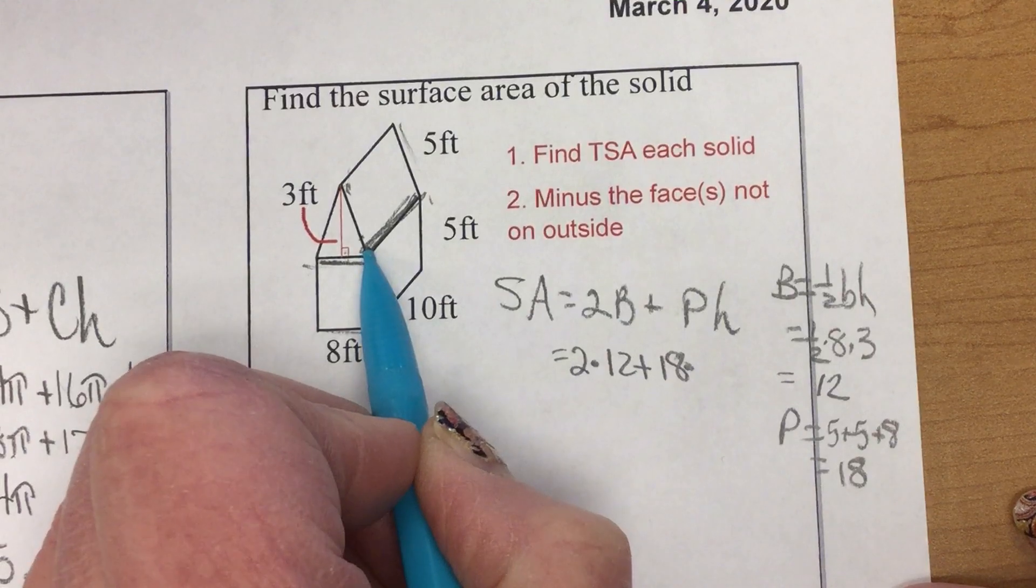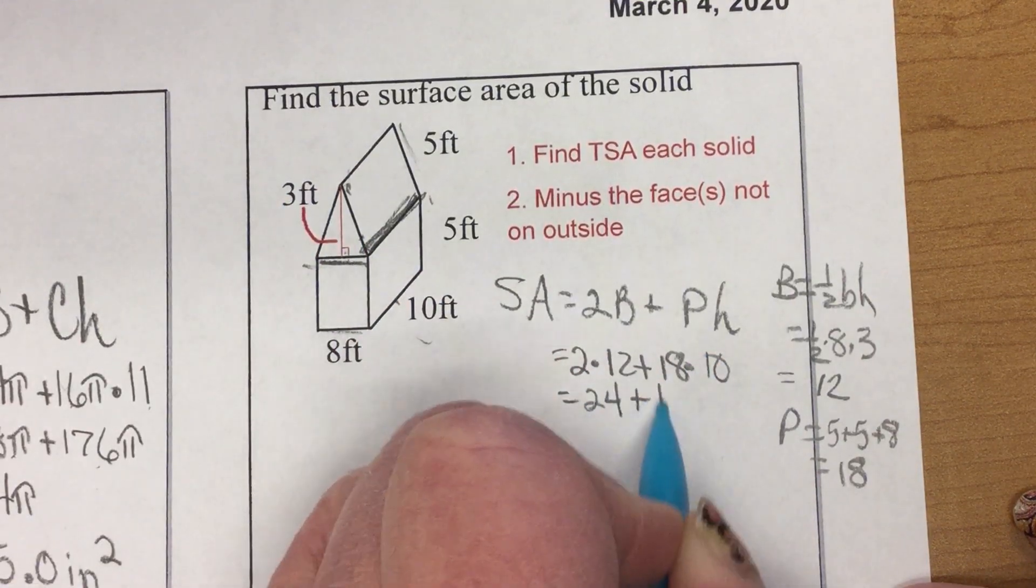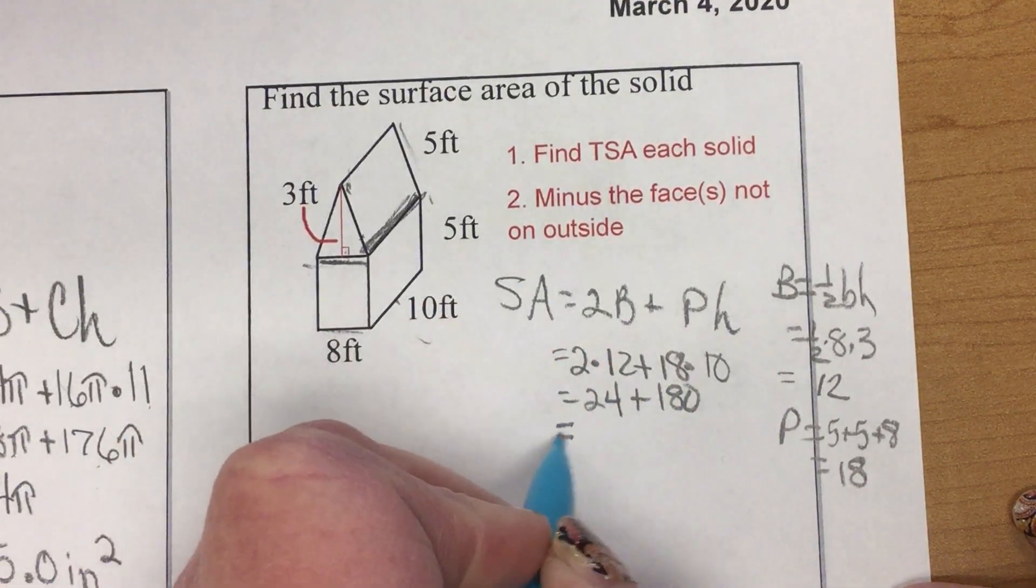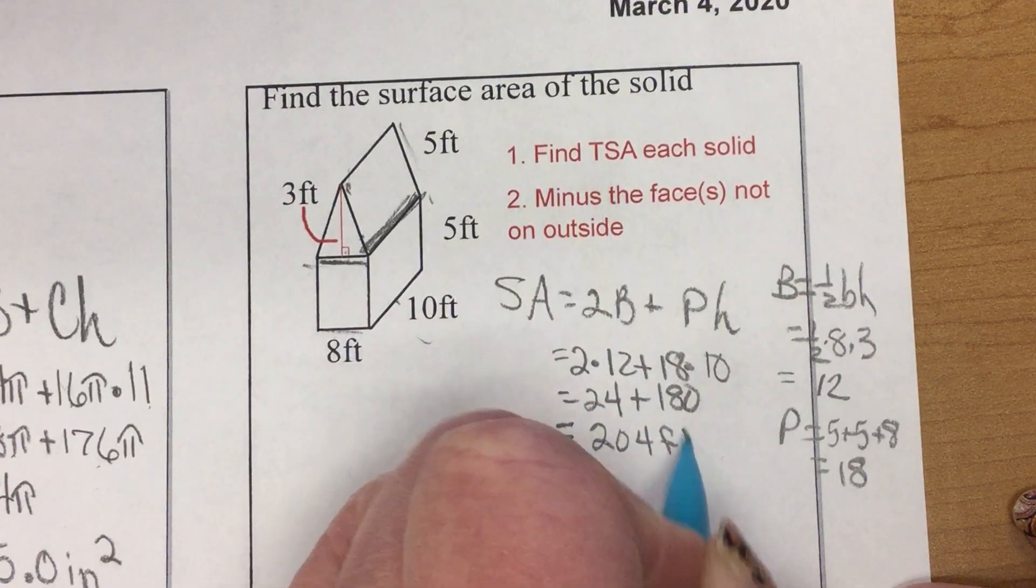So, I have 2 times 12 plus 18, and then this height here, which is horizontal, of 10. So, 24 plus 180, surface area of 204 square feet.